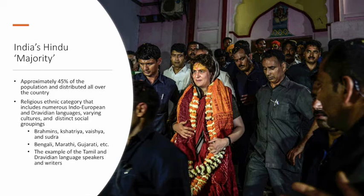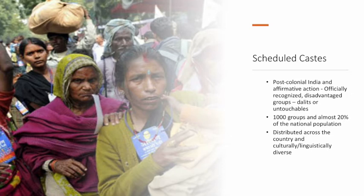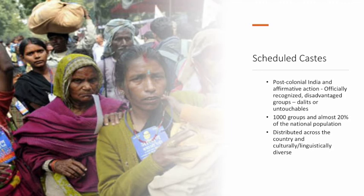After the Hindu majority, the Indian government also designates what they call Scheduled Castes. Even within the Hindu population, there are minorities — these Scheduled Castes — which emerged from post-colonial India's democratic development and affirmative action policies. These are officially recognized disadvantaged groups, including the Dalits or Untouchables. This is a huge population, almost 20% of the national population, made up of over a thousand different subgroups. Like the majority, they are distributed throughout the country and are very culturally and linguistically diverse.